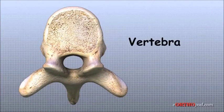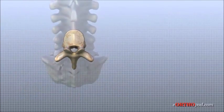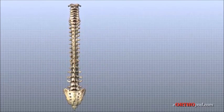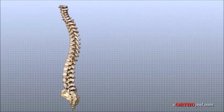The human spine is made up of 24 spinal bones called vertebrae. The vertebrae are stacked on top of one another to create the spinal column. The spinal column gives the body its main upright support.